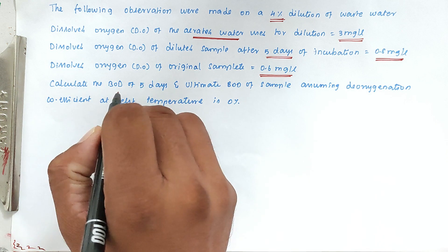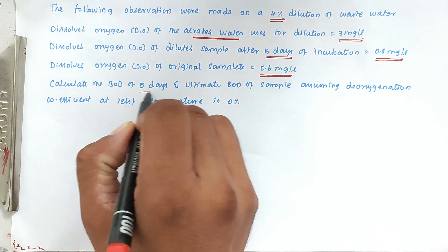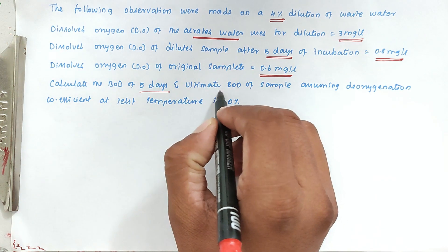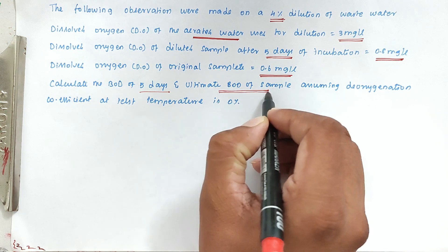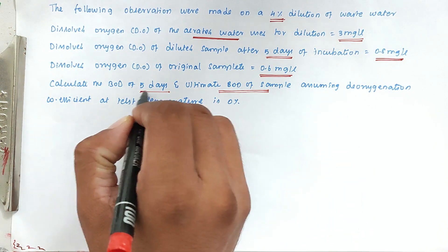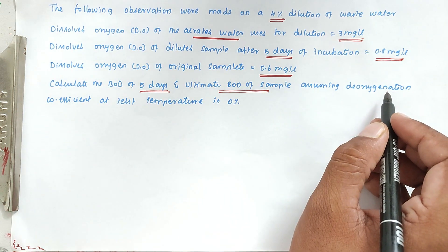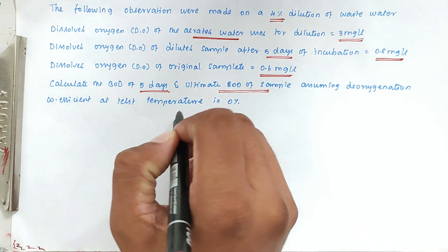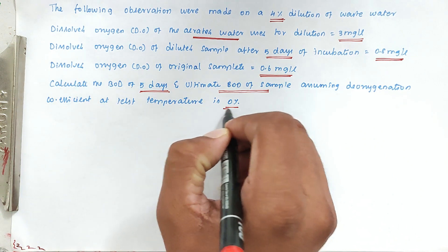So then calculate the BOD after 5 days — this is the first question — and then the ultimate BOD of the sample. We assume that the deoxygenation coefficient at the test temperature is 0.1.